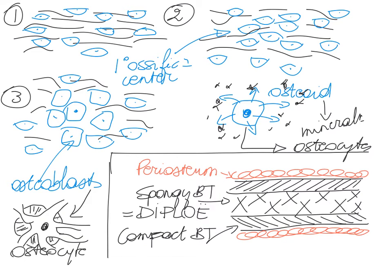So these osteoblasts eventually become osteocytes that sit in lacunae. That happens when the osteoblasts have become trapped in their own mineralized osteoid. When minerals move into the osteoid to form the hardened bone matrix, we find osteocytes.